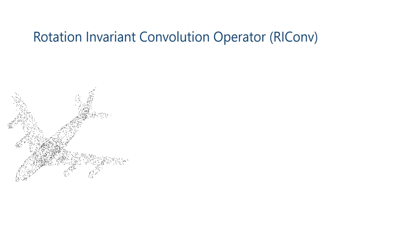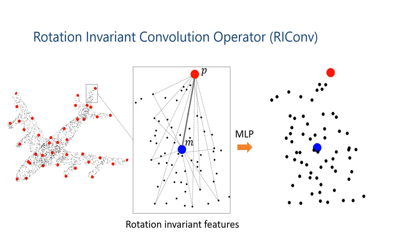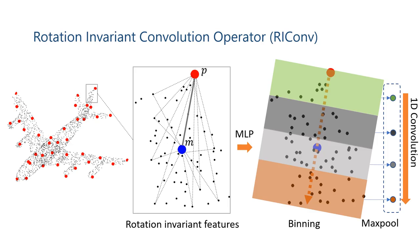Now we explain how to construct the rotation environment convolution operator based on the rotation environment features. Take this plane for example — we abstract it using a series of key points. For any point P, we select neighbors and compute the centroid as M. Vector PM serves as the reference, and the point set is transformed to local rotation environment features using the method described previously. These features are further lifted into a higher dimensional space using MLP. Then, according to the orientation of PM, the local space is uniformly divided into a series of bins. The points of each bin are summarized using max pooling, and finally a 1D convolution is performed to obtain the final features.